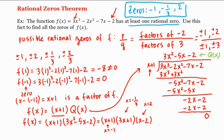Notice the last two zeros are rational — they should be in our list of candidates. Let's check: here is negative one-third, and here is two, so they are indeed in our list. And this is how we use the rational zeros theorem. Thank you, and we'll see you next time.